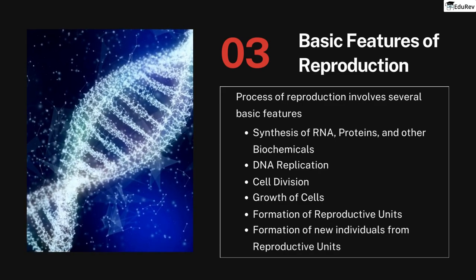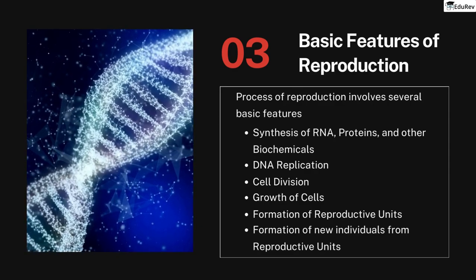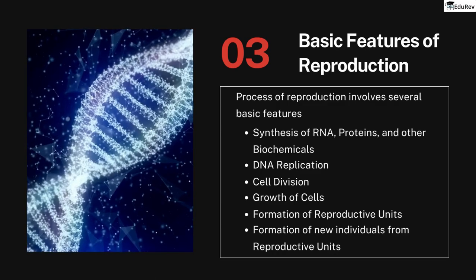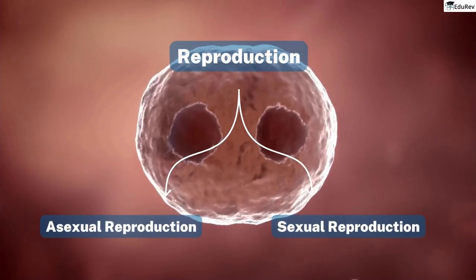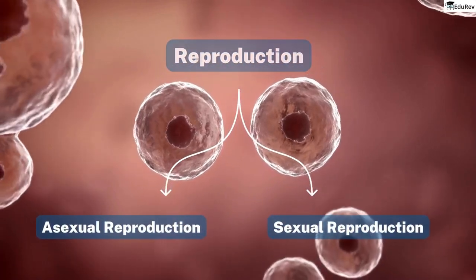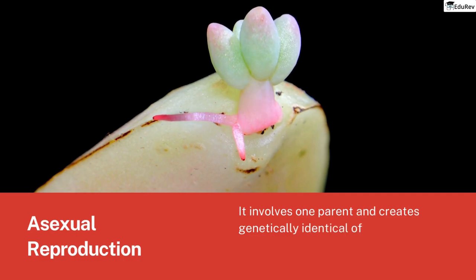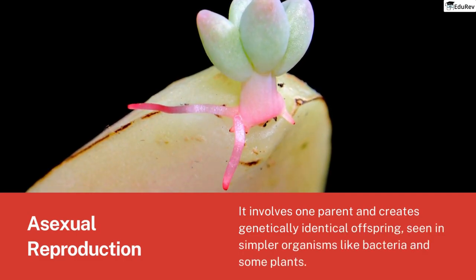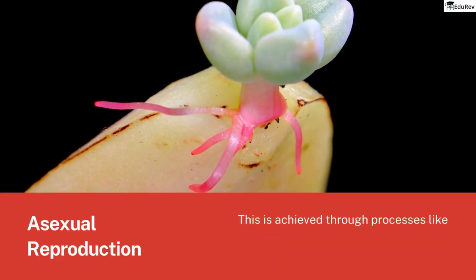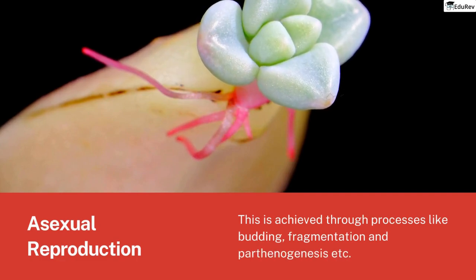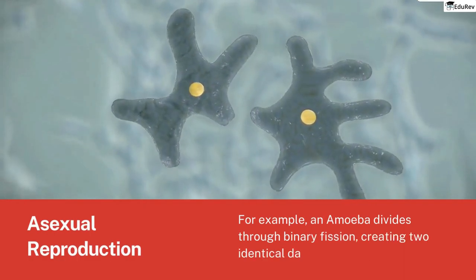Reproduction is the process by which living organisms produce new individuals of the same species. This can be achieved through two main methods: asexual reproduction and sexual reproduction. Asexual reproduction involves one parent and creates genetically identical offspring, seen in simpler organisms like bacteria and some plants. This is achieved through processes like budding, fragmentation, and parthenogenesis. For example, an amoeba divides through binary fission, creating two identical daughter cells.